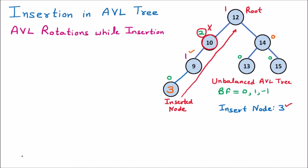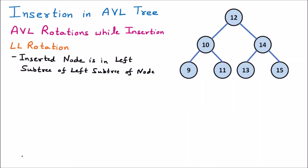First we discuss LL rotation. LL, as the name signifies, means left-left — the inserted node is in the left subtree of the left subtree of a node. I have taken an example tree to explain LL, RR, and the other rotations. We have a root node here, which I am assuming as our reference node.